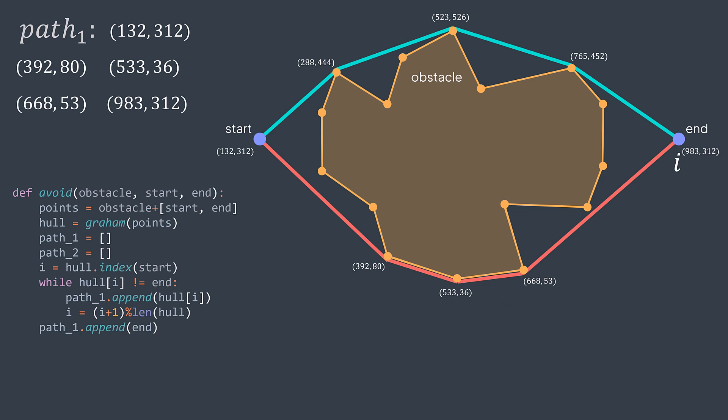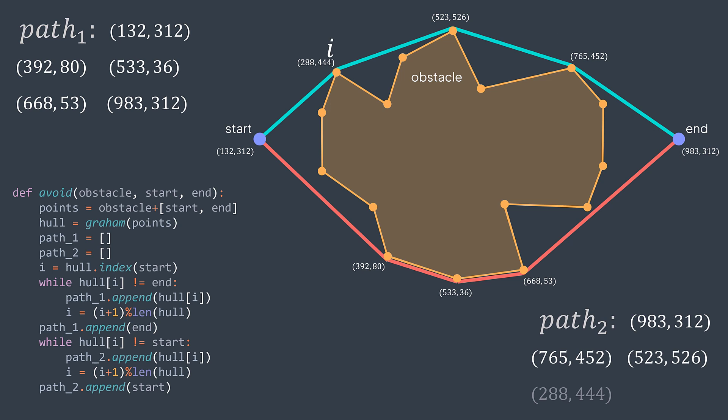We're actually at the endpoint and we keep walking until we reach start again. So while hull of I isn't equal to start, we add hull of I to path two, and we move to the next point. After the loop, we add the last point of path two start.